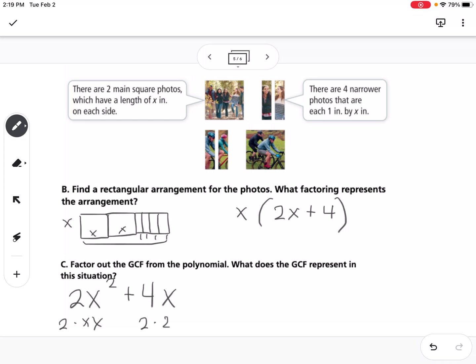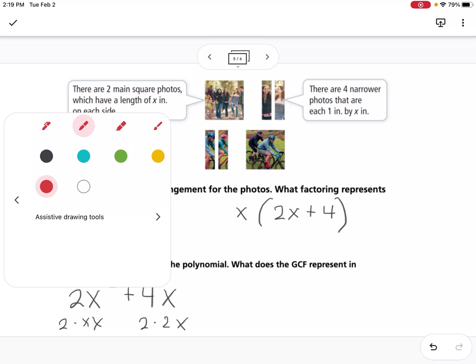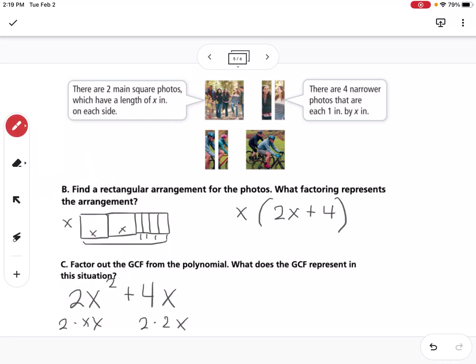This would be 2 times 2 and an x. So our GCF would be a 2 and an x. So we'd write 2x and we'd have leftover x plus 2.